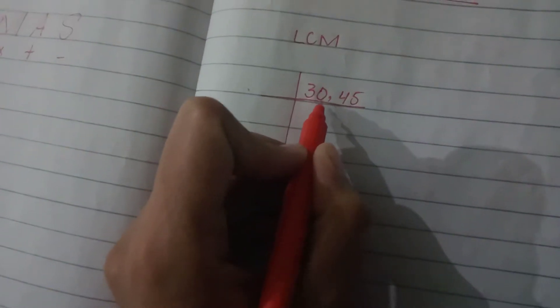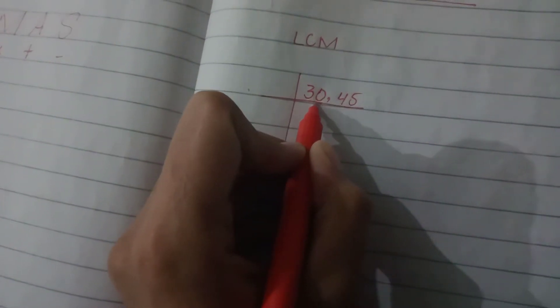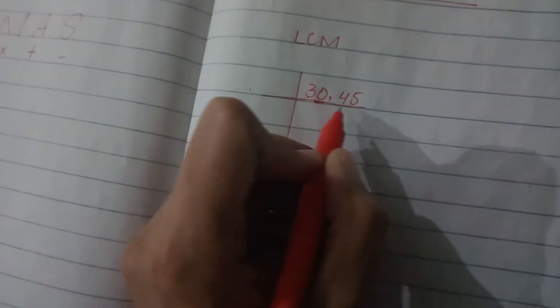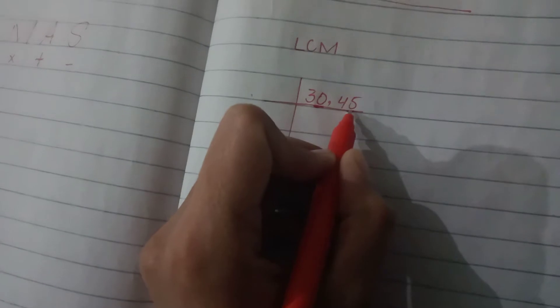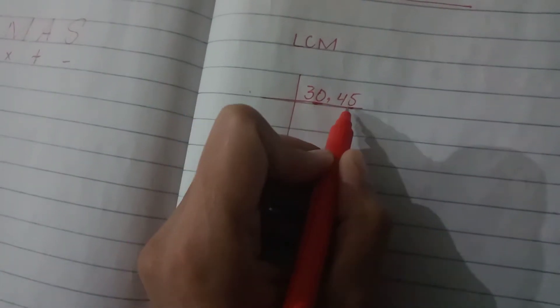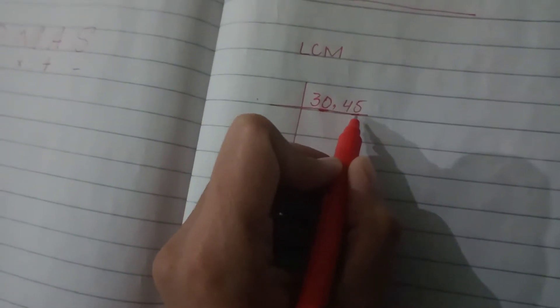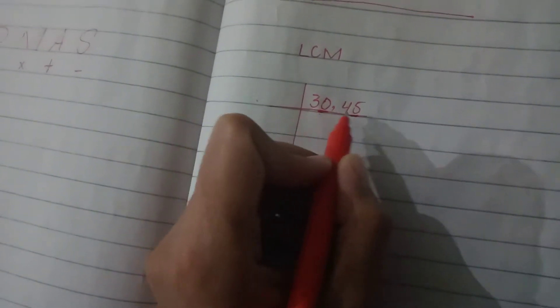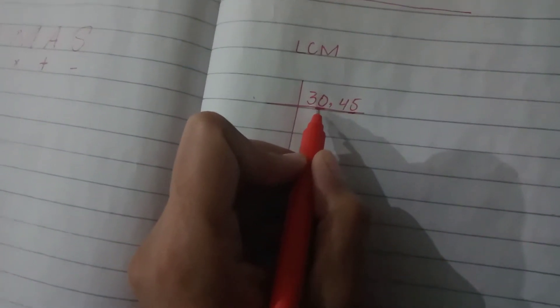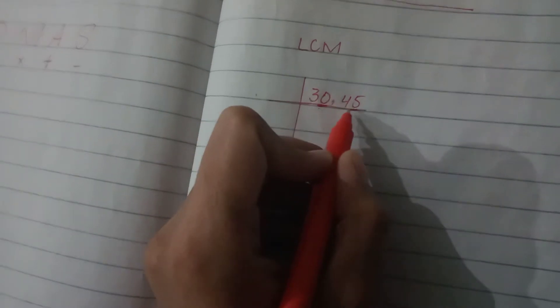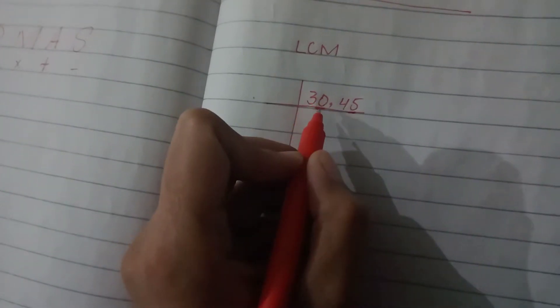First of all, you have to check out their divisibility. Students are seeing that this last digit is zero and its last digit is five, so these two are divisible by 3 and 5. So it's up to you which number you have to take.